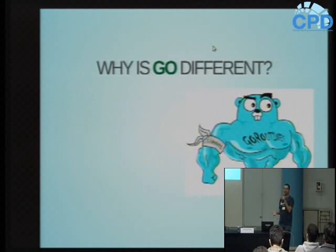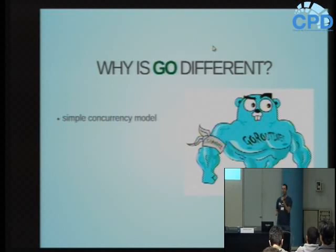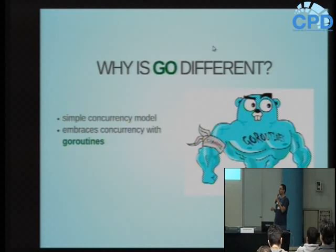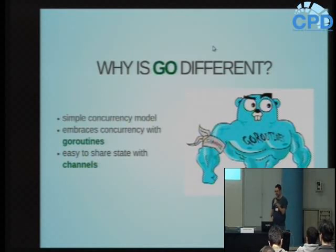Por que Go é diferente? Por que no Go é considerado um assunto mais simples? Porque Go tem um modelo de concorrência diferente. Um dos principais objetivos do Go é abraçar concorrência - não evitar, mas aceitar como um recurso da linguagem. O modelo de concorrência do Go é muito simples, baseado em GoRoutines e em Channels. A GoRoutine é a primitiva de concorrência que permite criar código concorrente, e o Channel é um recurso que permite compartilhar estado.